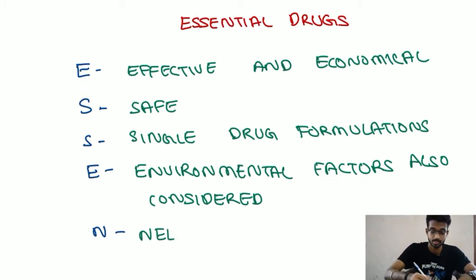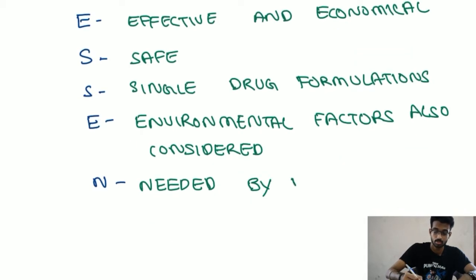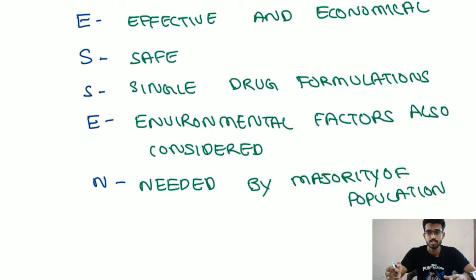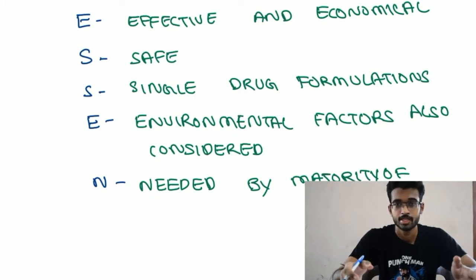Environmental factors are also considered in making the choice. What is called as needed — needed by majority of population. Some drugs are contraindicated. It is also called as contraindication. If we use it, we can use essential drugs. Essential drugs are mostly used by all of us.